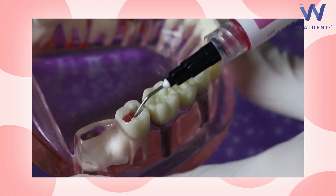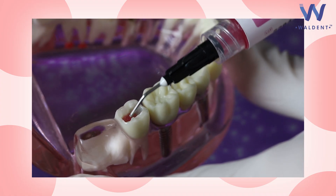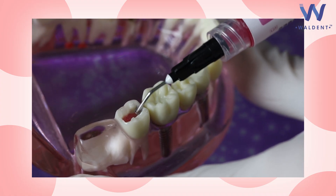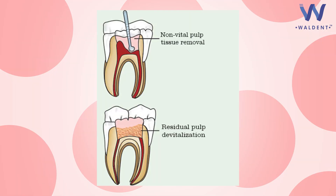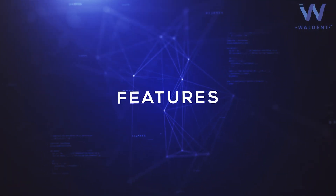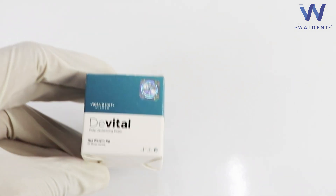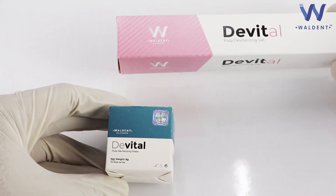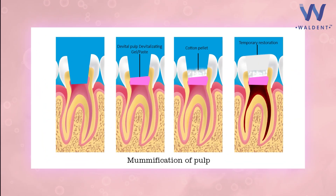Walden DeVital pulp devitalizing paste and gel is used prior to extirpation of pulp. It is also used for residual devitalization after removal of non-vital pulp tissues. It comes in both paste and gel form, causes rapid mummification of pulp, and relieves pain.